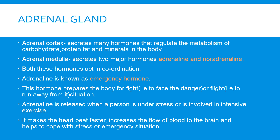The adrenal cortex secretes many hormones that regulate the metabolism of carbohydrates, proteins, fats, and minerals. The adrenal medulla secretes two hormones: adrenaline and noradrenaline. These two hormones act in coordination with each other. Adrenaline is known as the emergency hormone.